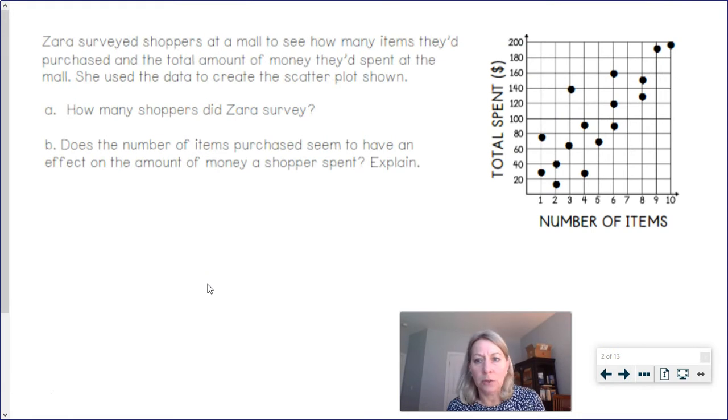All right let's get right into it and take a look at this graph that's shown about Zara. So Zara surveyed shoppers at a mall to see how many items they'd purchased and the total amount of money they had spent at the mall. She used the data to create the scatter plot shown. How many shoppers did Zara survey? So that's the first question. The second question, does the number of items purchased seem to have an effect on the amount of money a shopper spent? And then be ready to explain.